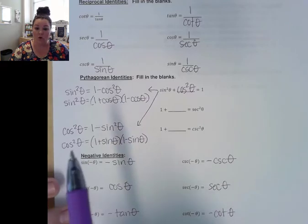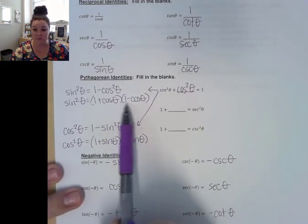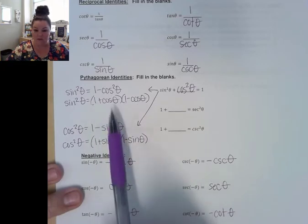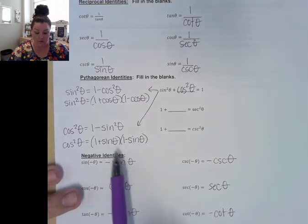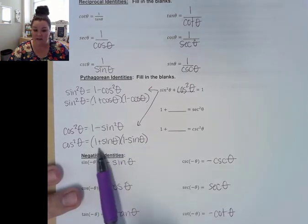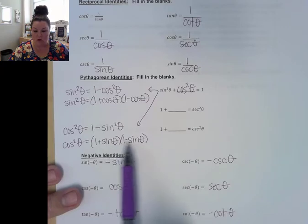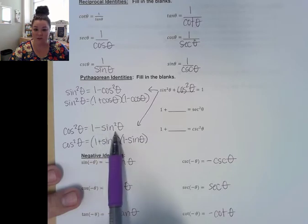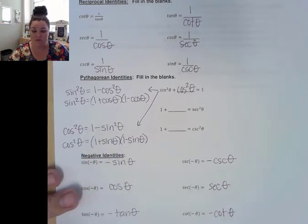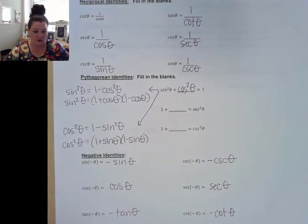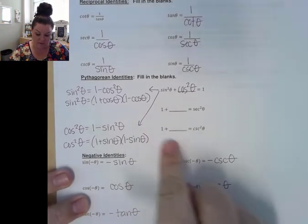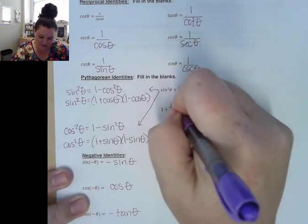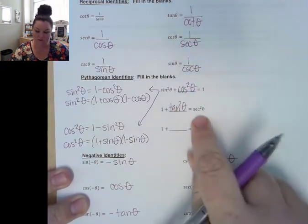Today we're going to see this other simplified version. So if you see a 1 minus cosine, or 1 plus cosine, or 1 plus sine, or 1 minus sine, knowing you could do something to modify it — if you could get both of those quantities, they multiply to give you a difference of squares expression. Our second Pythagorean identity is 'one tan second': 1 plus tangent squared theta equals secant squared theta.